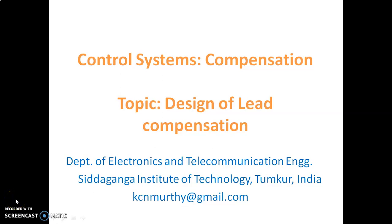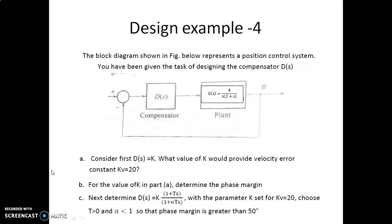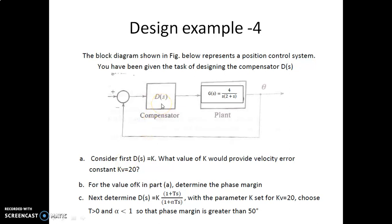Welcome to one more video on compensation. In this we'll see a fourth example of designing a lead compensator. We have a plant with a transfer function, and the first condition is to consider D(s) as K. We need to find the value of K such that the velocity error constant Kv equals 20.